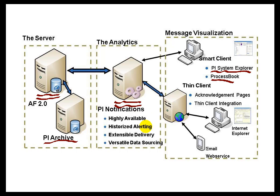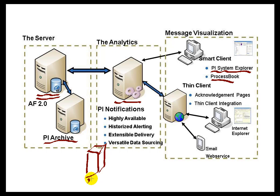During the install for Notifications, that's when we're going to be asking you for the location of these two servers. If you are going to be using email for Notifications — and most of our users of PI Notifications are using the email delivery channel — then you're going to have to have access to an SMTP Server. That SMTP Server is going to have to be accessible from Notifications.